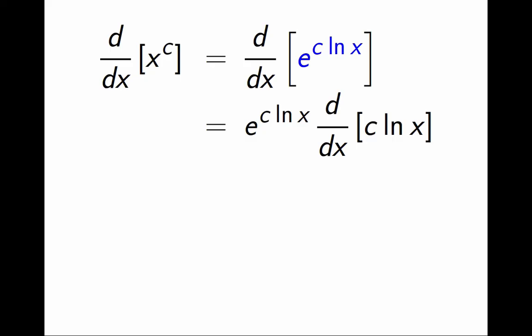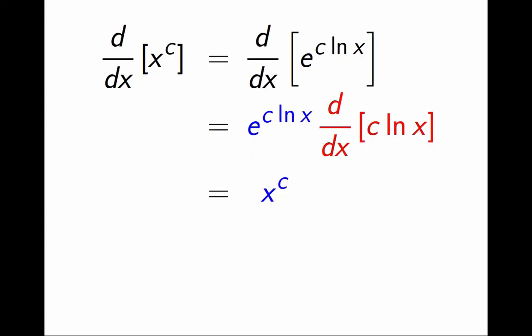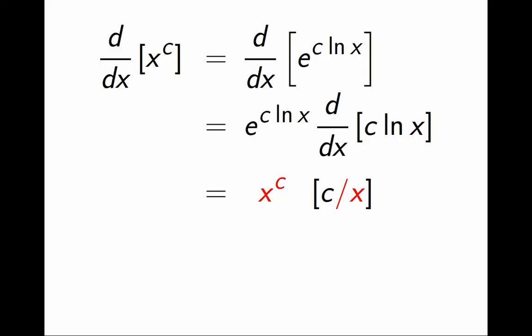Next, I can write e to the c ln x back as x to the c. And the derivative of c ln x is c divided by x. And finally, I regroup x to the c divided by x as x to the c minus 1.